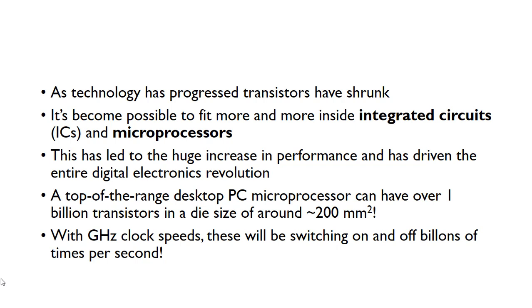A top-of-the-range PC now has a processor with well over 1 billion transistors, and the size of the die — the actual size of the processor — is typically around 200 millimetres squared, roughly the size of your thumbnail. So over a billion transistors in an area that small. When we consider clock speeds, we've got a few gigahertz as standard, meaning these transistors are switching on and off billions of times per second.